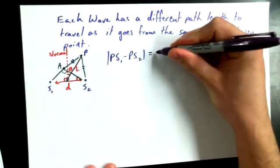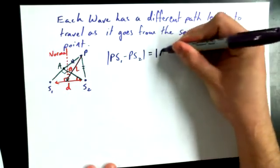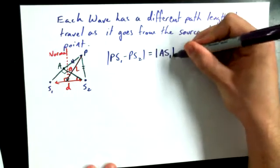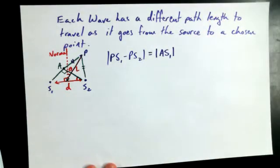PS1 minus PS2, absolute values, would have to be, the difference between them would have to be equal to AS1, the length of the line defined by AS1. That's the difference in those line segment lengths would be AS1.